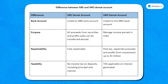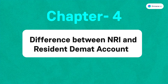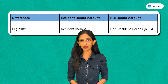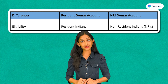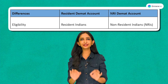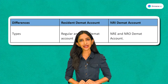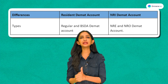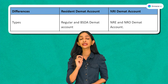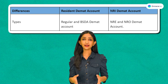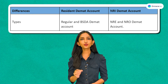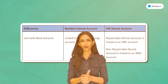The main difference between a resident DMAT account and an NRI DMAT account lies in the residency of the account holder. A regular DMAT account suits residents in India, while an NRI DMAT account is specifically designed for non-resident Indians. For residents, there are regular and BSDA DMAT accounts — regular ones cater to all investor types, whereas BSDA is for smaller investors with capped holdings and reduced charges. For NRIs, there are two types: NRE (non-resident external), which is repatriable, and NRO (non-resident ordinary), which is non-repatriable.